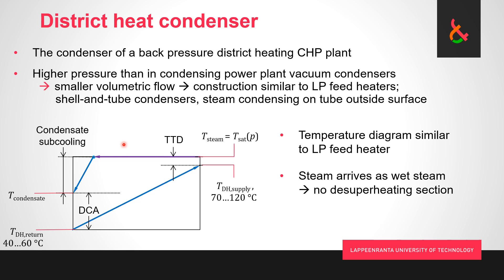In a condensing power plant it's a bad thing, but here we're dumping the energy into the district heating water, so we're producing district heat. We're doing it at the expense of power generation, but there can be situations where we want to do that. DCA drain cooler approach is similar to feed heaters, maybe 5 to 10 degrees Celsius typically.